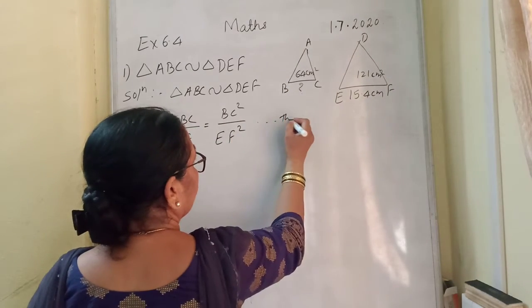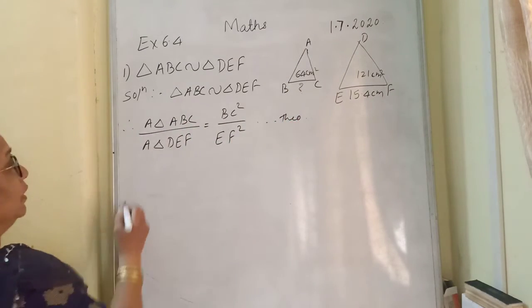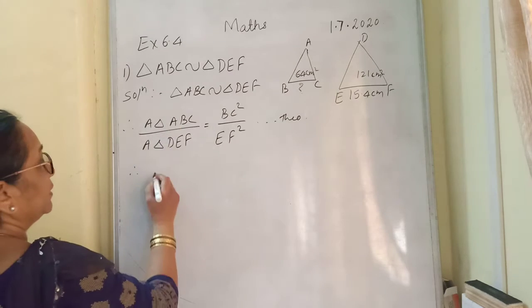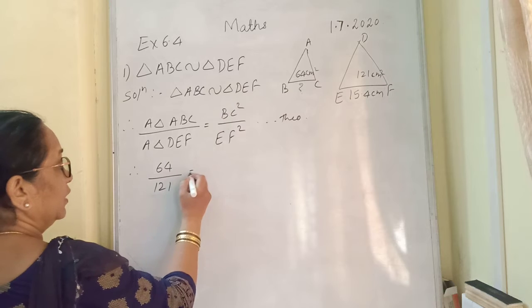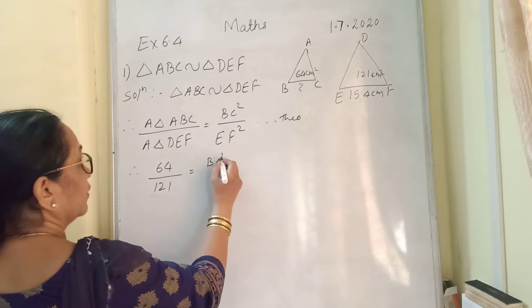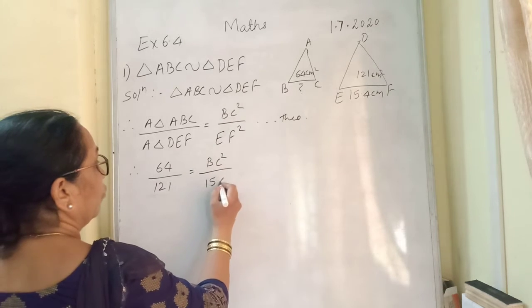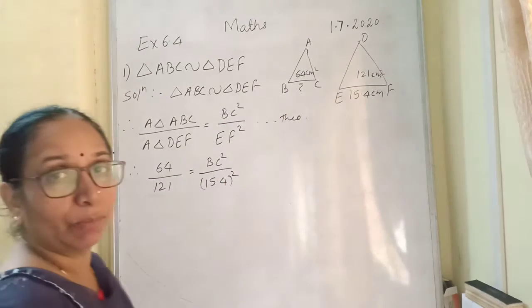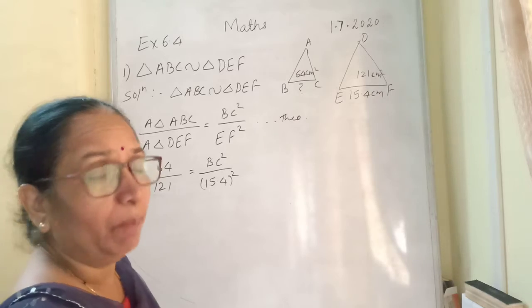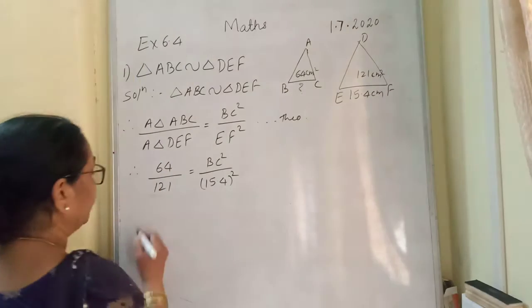The reason is theorem. Therefore, area triangle ABC is 64 cm square upon 121 is equal to BC square upon 15.4 whole square. Now here, no need to multiply 15.4 into 15.4 because it is going to get cancelled.